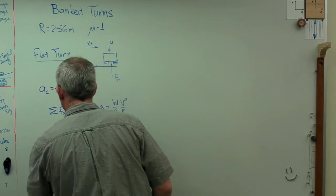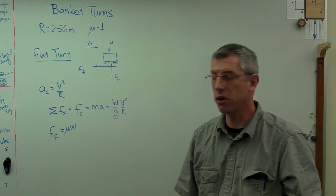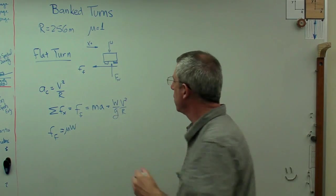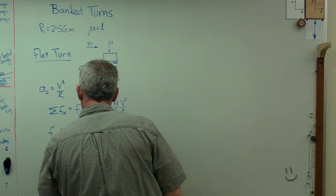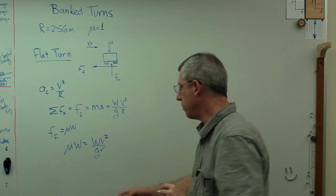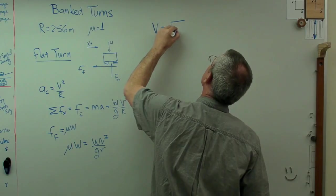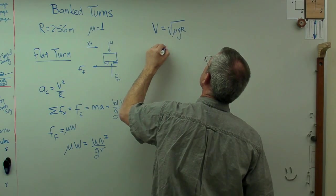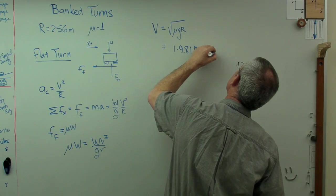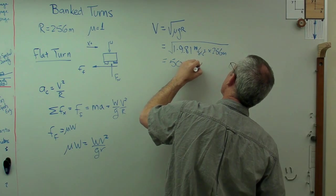The friction force here is just weight times mu. Force down times mu, which is the coefficient of friction. So mu times w equals w times v squared over g times r. If I solve that, I'm going to find out that v equals the square root of mu g r, which for this is 1 times 9.81 meters per second squared times 256 meters. Take the square root of that and I get 50.113 meters per second.